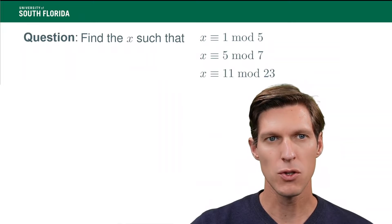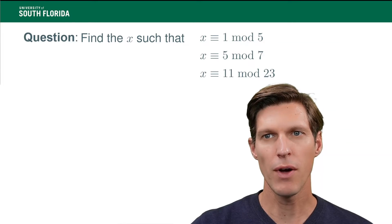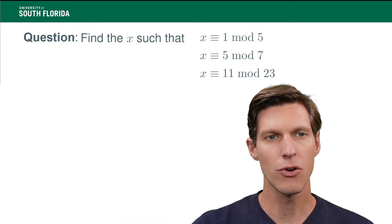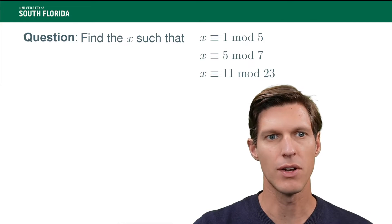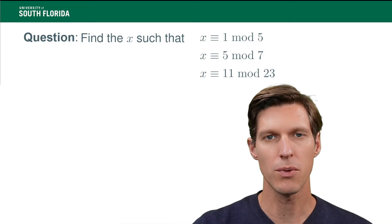So, what it means is, suppose that you have to solve for x the following congruences: x congruent to 1 mod 5, x congruent to 5 mod 7, x congruent to 11 mod 23.